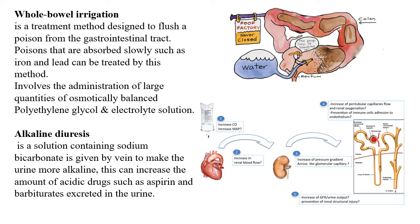Whole bowel irrigation is a treatment method designed to flush poison from the gastrointestinal tract. Poisons that are absorbed slowly, such as iron and lead, can be treated by this method. It involves the administration of large quantities of osmotically balanced polyethylene glycol and electrolyte solutions.